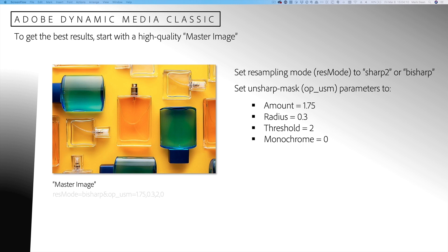We recommend an image with a minimum longest pixel dimension of 2000 pixels. As a starting point, we suggest the following sharpening settings to produce a high quality image: set the resampling mode to sharp2 or bisharp, and set the unsharp mask parameters as follows — Amount 1.75, Radius 0.3, Threshold 2, and Monochrome 0. These settings generally produce great results by combining a high quality resampling mode with additional unsharp masking, but you will need to determine the best settings for your own images through testing.